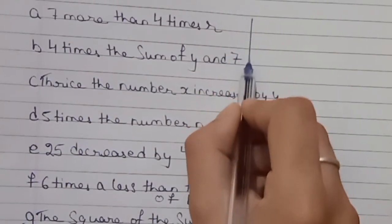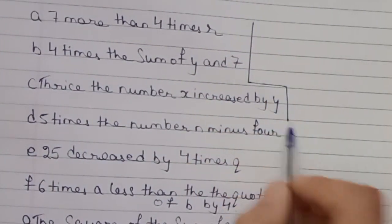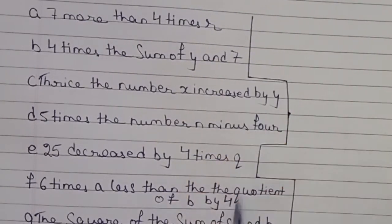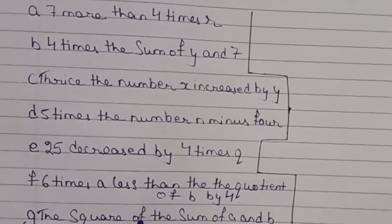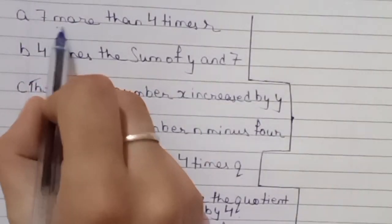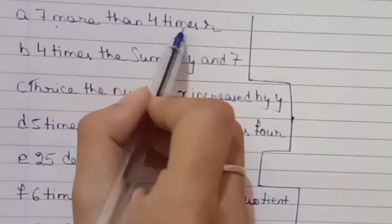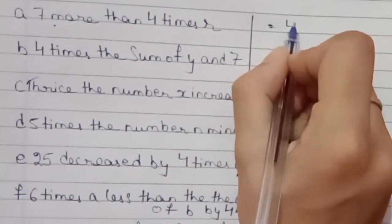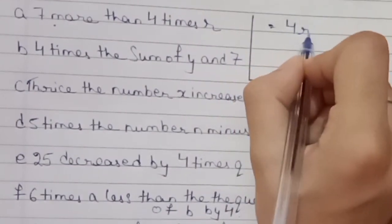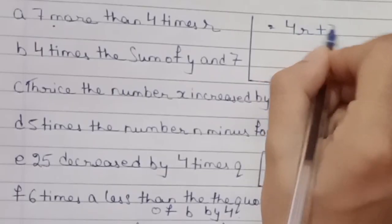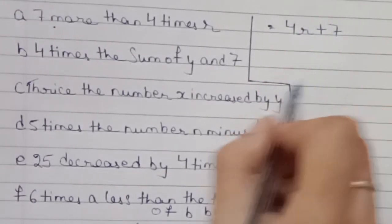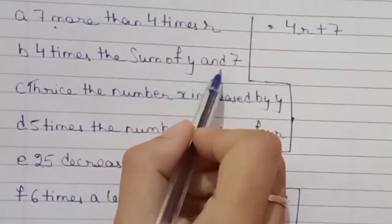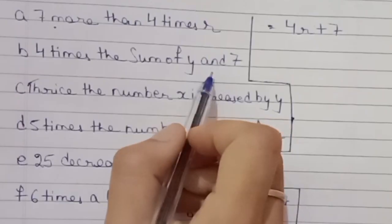I have noted this down beforehand. Second part E: 7 more than 4 times r is given. So we will write it as 4r plus 7. B: 4 times the sum of y and 7 is given in the question.